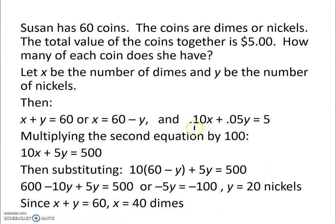We also know that 0.10, or the dime, times the number of dimes, which we said would be x, 0.10 for the dimes. We are left with 0.10x plus 0.05y, which is the nickel, equaling 5, because we're told it's $5. Multiplying that second equation by 100, this equation right here, we find that we have 10x plus 5y equals 500.